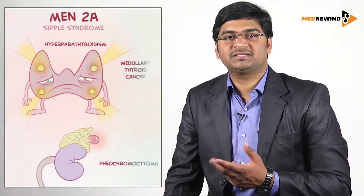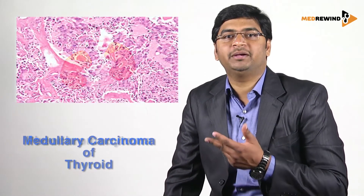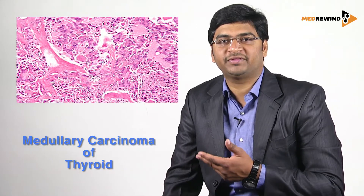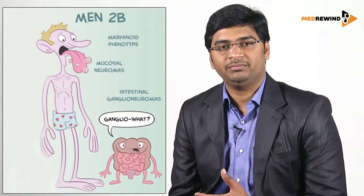Coming to MEN 2a, it is two P's and one M — that is parathyroid hyperplasia, pheochromocytoma, and medullary carcinoma of thyroid.